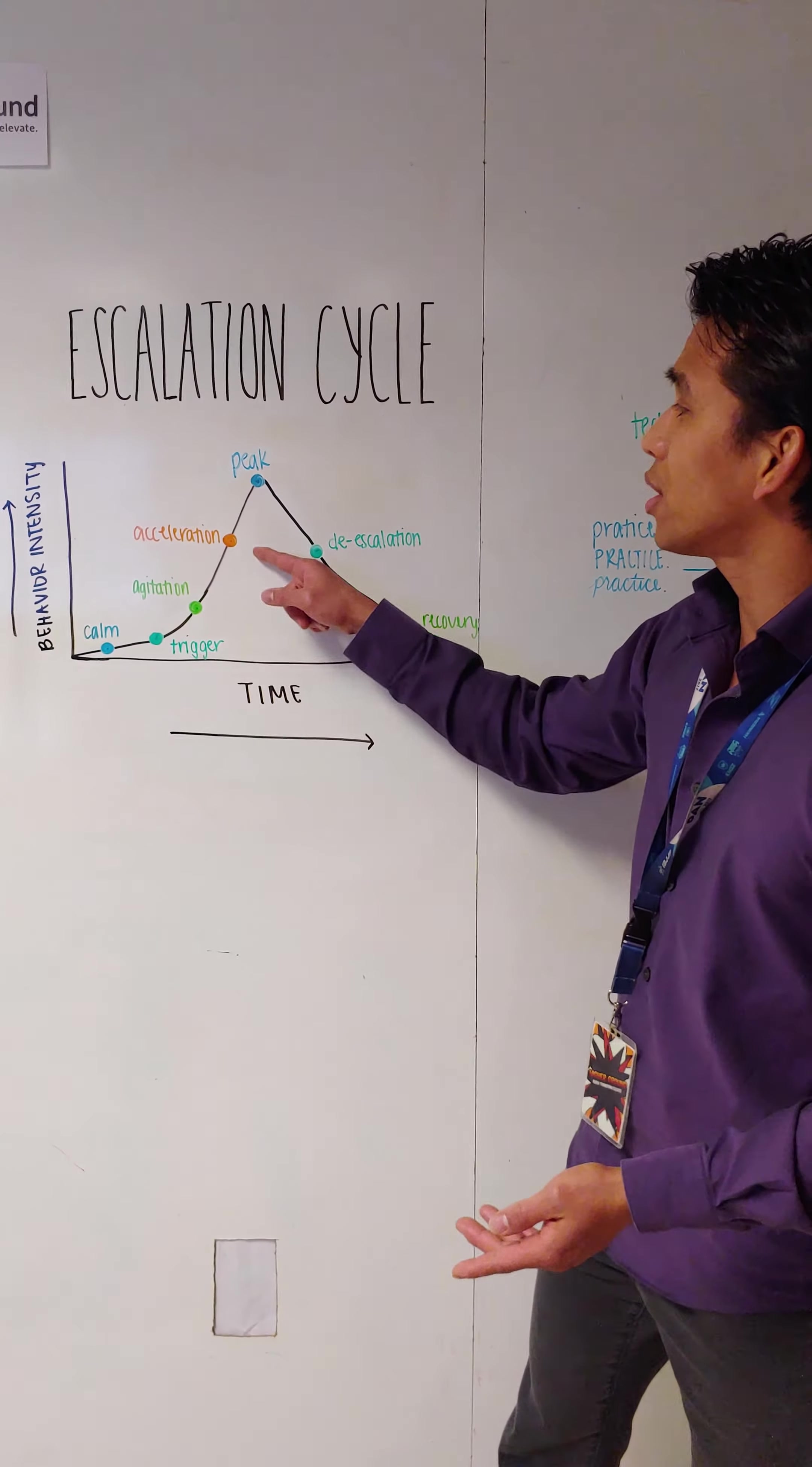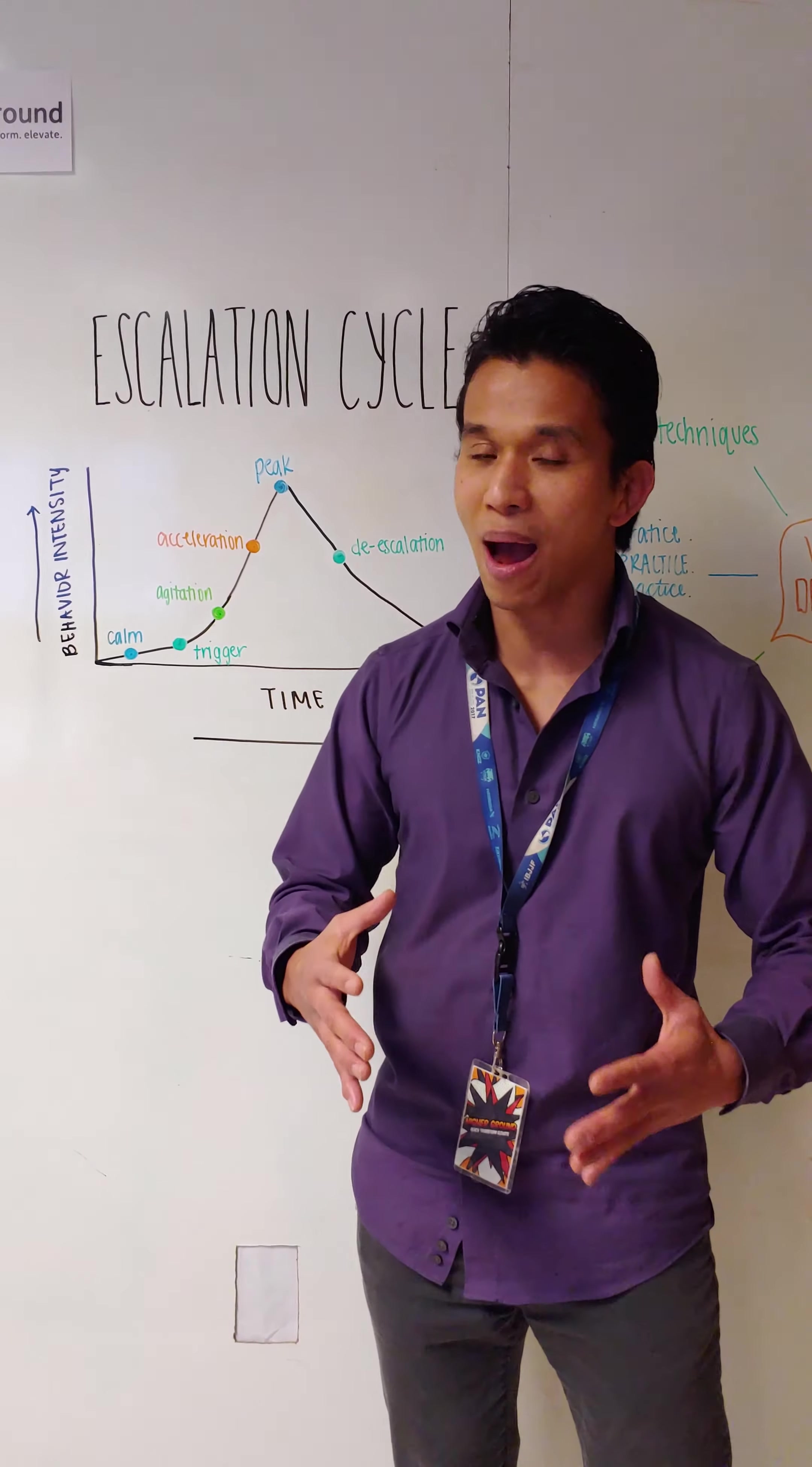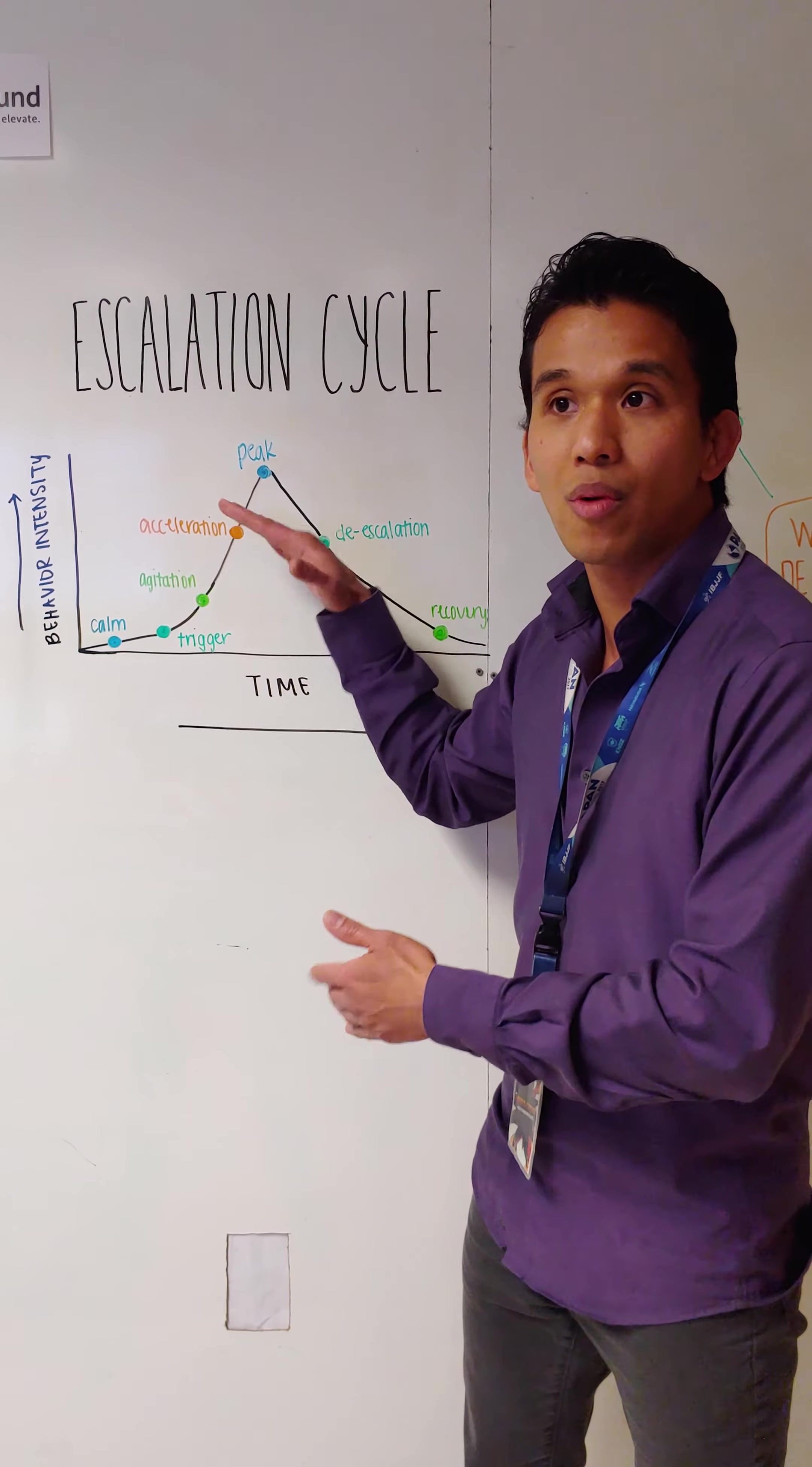Then, there's a point of what we call the acceleration. This is when the behavior kind of starts becoming inappropriate. Now, at this point, you can actually respond and you can quell it right here. Sometimes, you know, you give them the stare of a parent, you know, that powerful stare. Or, you've mentioned their full name. We always joke, oh, when we start saying our kid's second name, oh, that means they're in trouble. And, sometimes, you can stop it right here at acceleration.